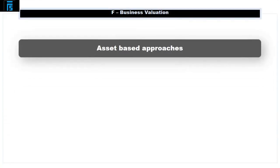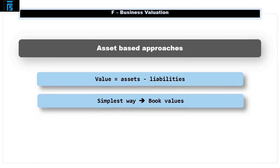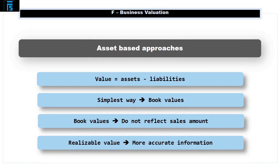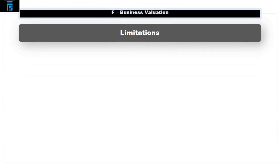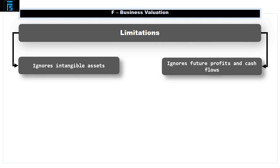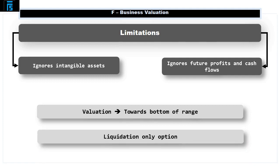Asset-based approaches. A company can be valued as the value of its net assets, i.e. assets minus liabilities. The simplest way to assess this is based on book values; however, these do not necessarily reflect the amount that would be achieved in a sale. As such, a realisable value — the amount generated from a sale of the assets — will provide a more accurate valuation, albeit it is more difficult to assess. Limitations of the asset-based approach are: it ignores the value of intangible assets, and it ignores the fact that the company can be used to produce future profits and cash. The asset-based approach is likely to produce a valuation towards the bottom of the negotiation range, and is only really valid when liquidation is the only other option for the seller.